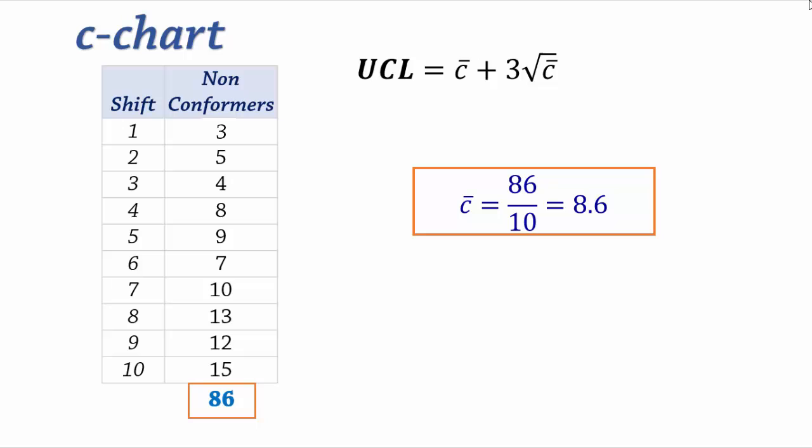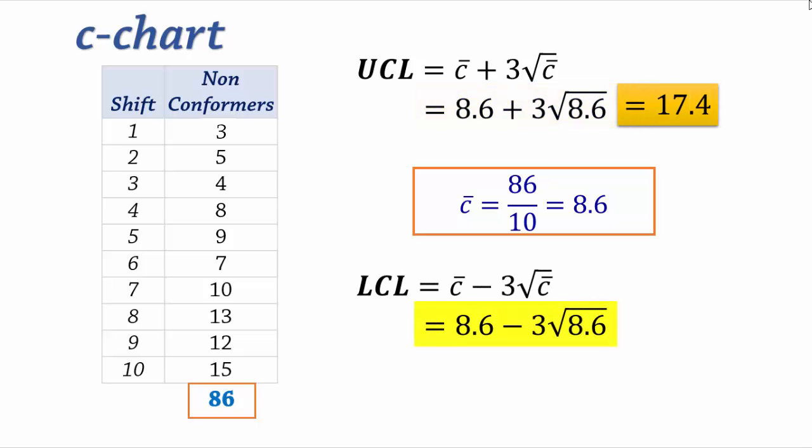The upper control limit is 8.6 plus 3 times square root of 8.6, which gives 17.4. And the lower control limit gives negative 0.2. Since we don't expect negative number of non-conformers, we usually just replace negative lower limit values by 0. This applies to P-charts as well.